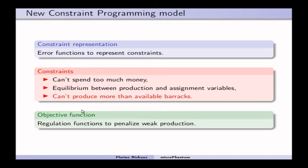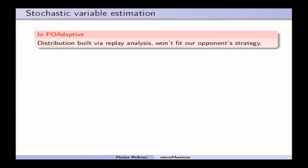And inside the objective function, now, I use a regulation function to penalize the fact that we try to produce an army that is not able to beat the guest enemy army composition.